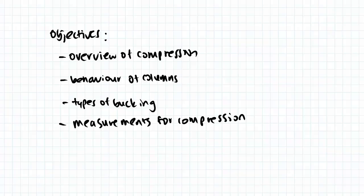We're also going to look at the general behavior of columns under compression, and we're going to look at different types of buckling, which is a lateral deflection which occurs as a side effect of compression. And lastly, we're going to look at the different measurements or capacities for measuring compressive strength.